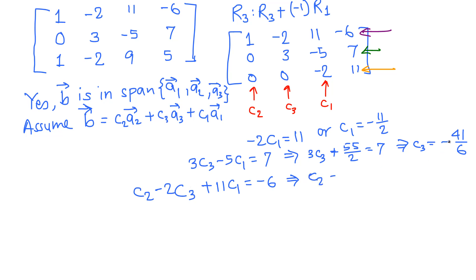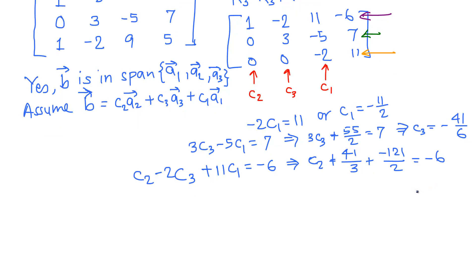c3 is -41/6, minus 2 times so that's plus 2 times 41/6. 2 divided by 6 is 3, so 41/3, plus 11*c1. c1 is -11/2, so 11 times -11/2 is -121/2, equals -6. We need to combine these two fractions and then subtract from the right hand side. Then just simplify. It comes out to be c2 equals positive 245/6.